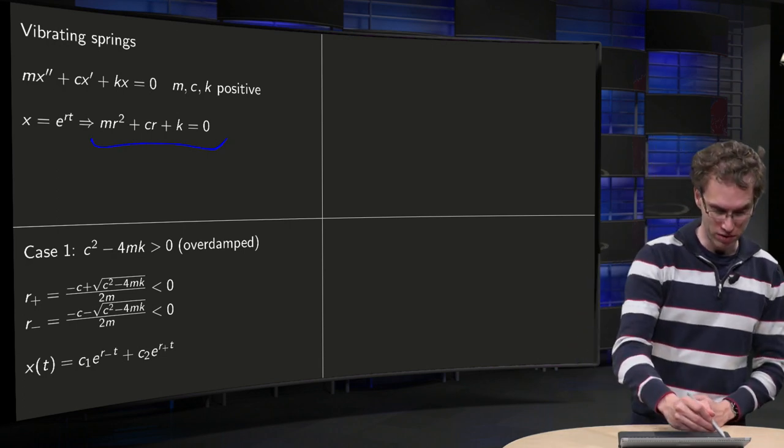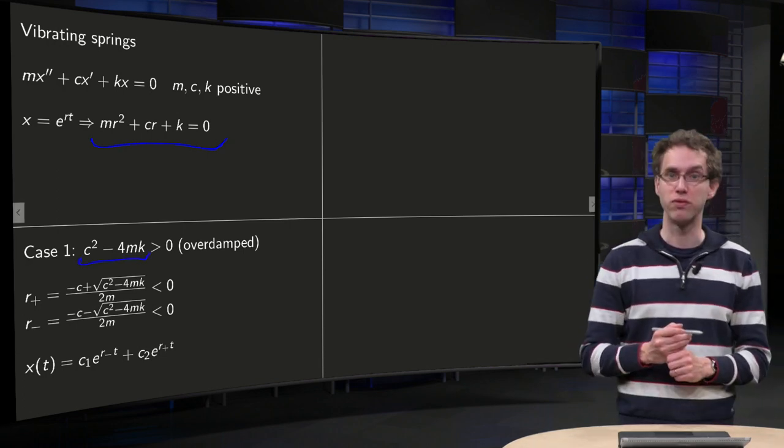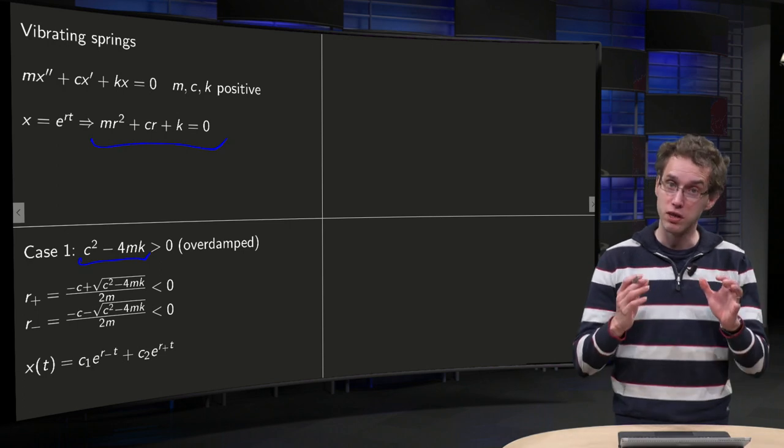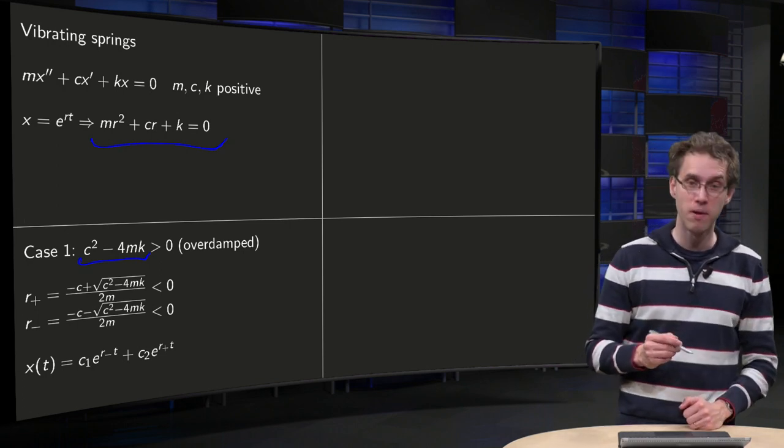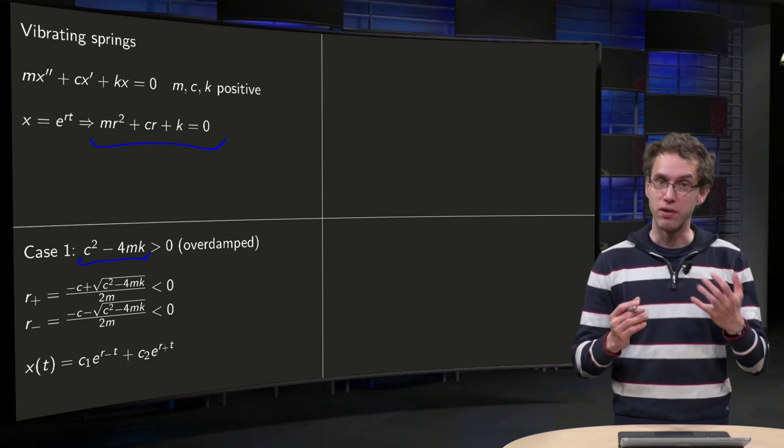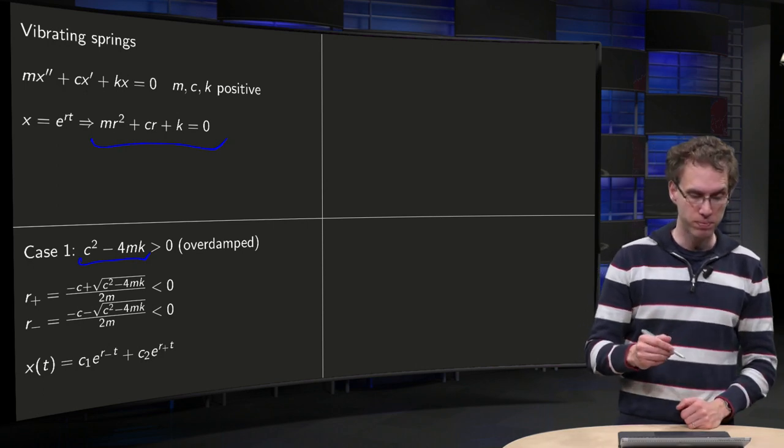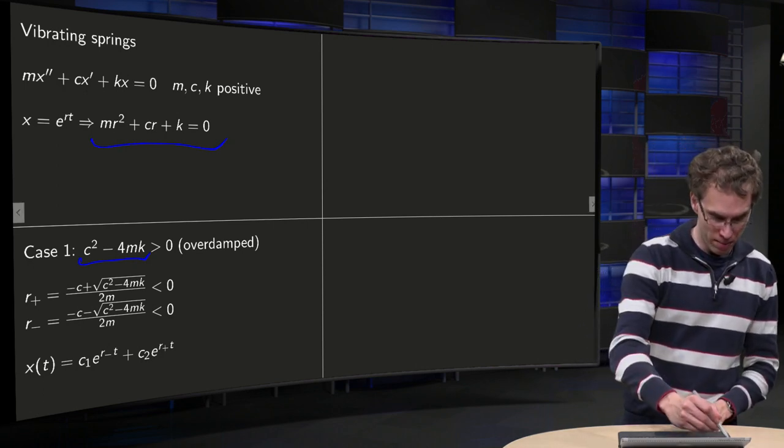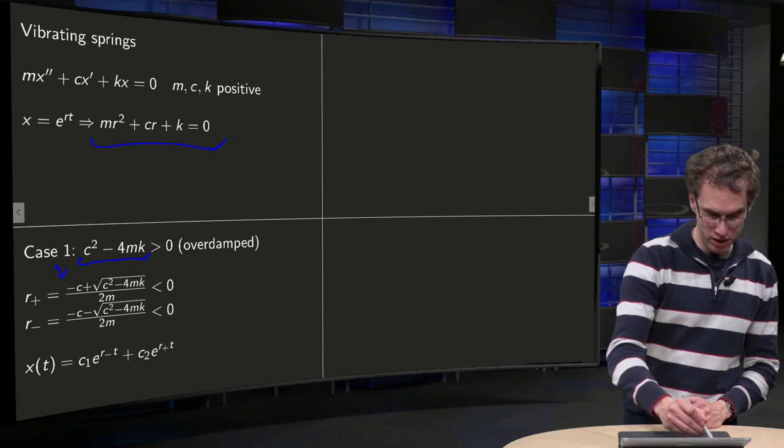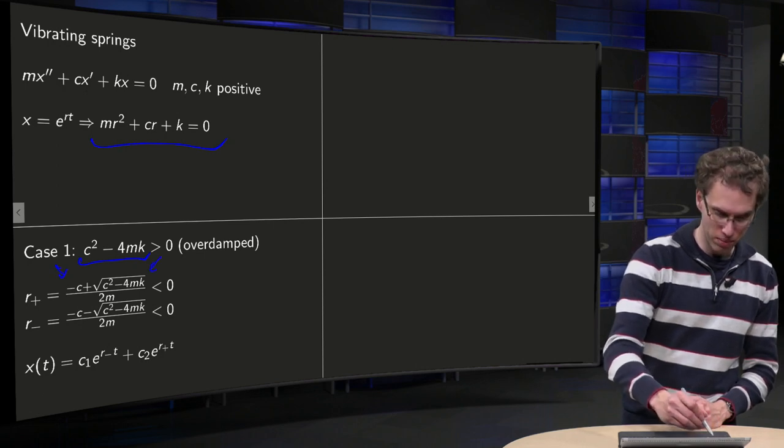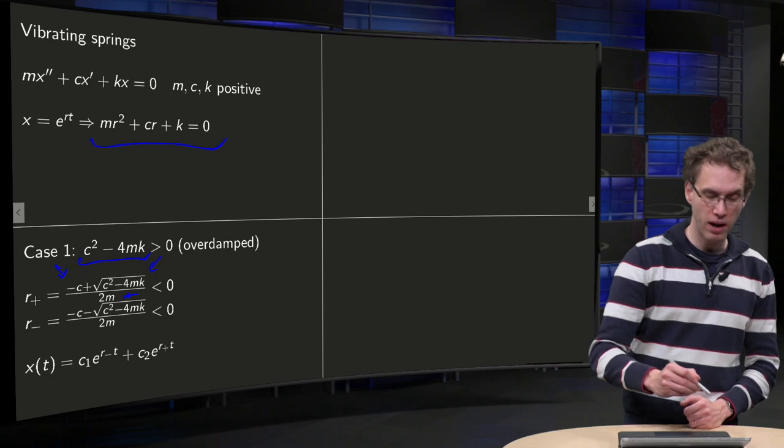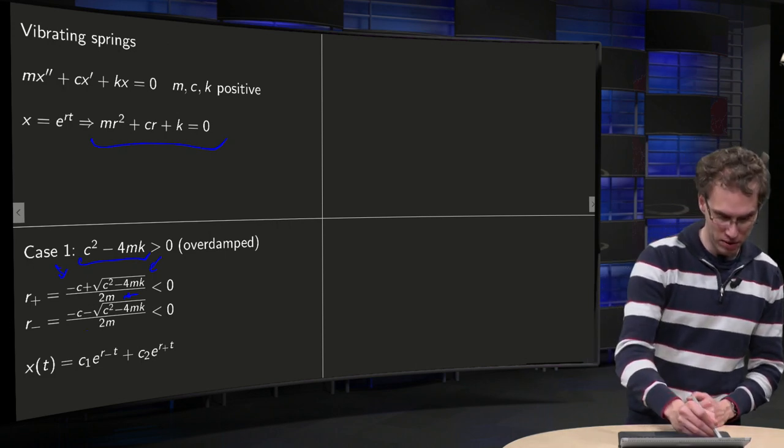First we will look at the positive case, so c squared minus 4mk positive. This motion is called overdamped. And in that case we can find our r plus and r minus, r minus equals minus c plus the square root of the discriminant divided by 2m, and r minus same but then with a minus sign.